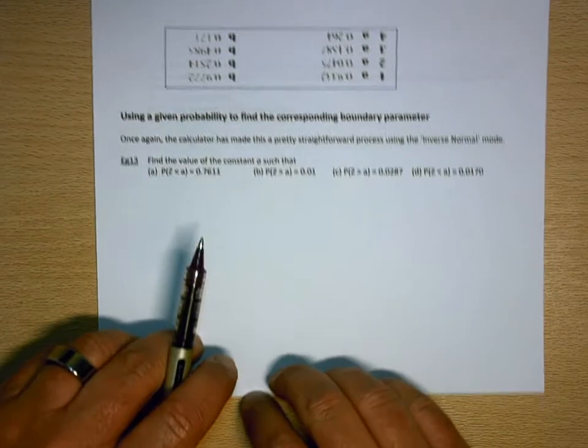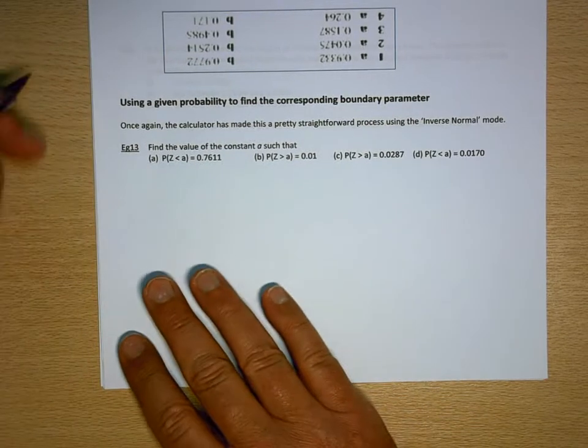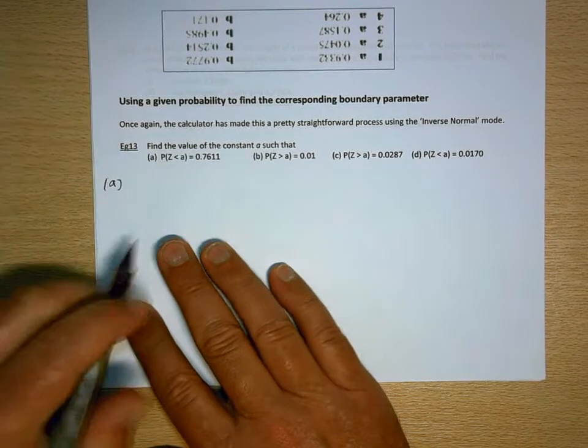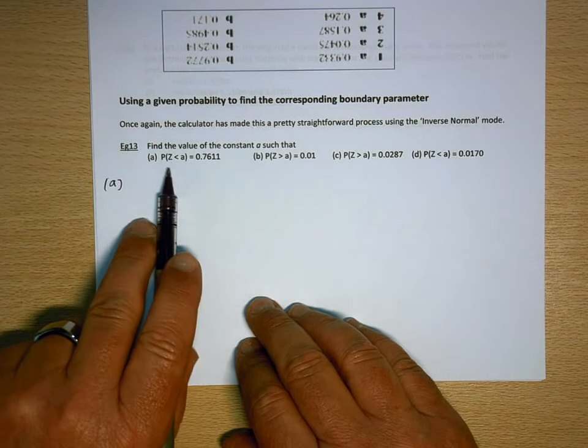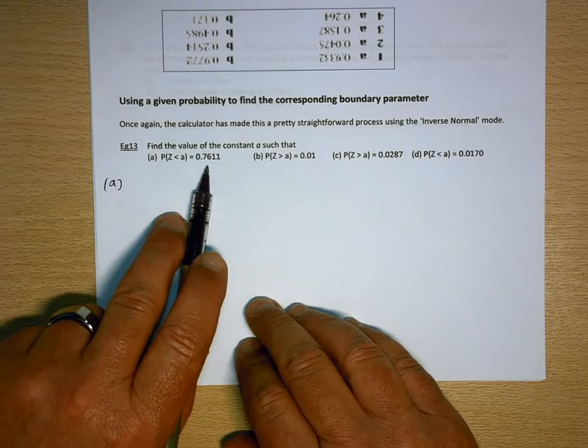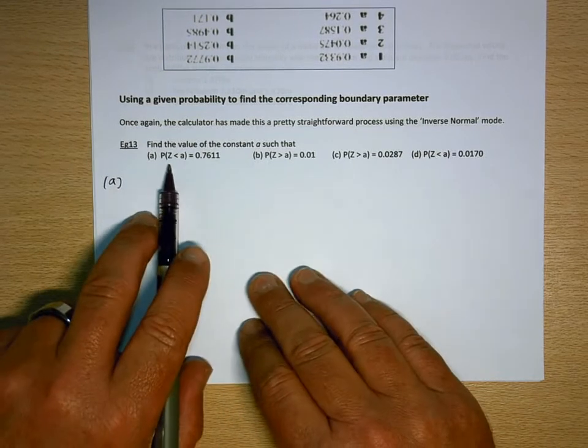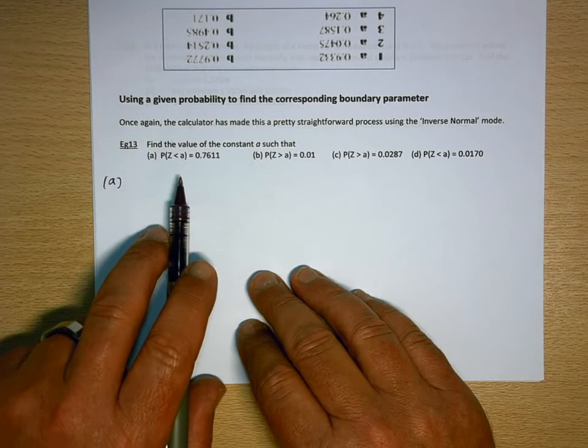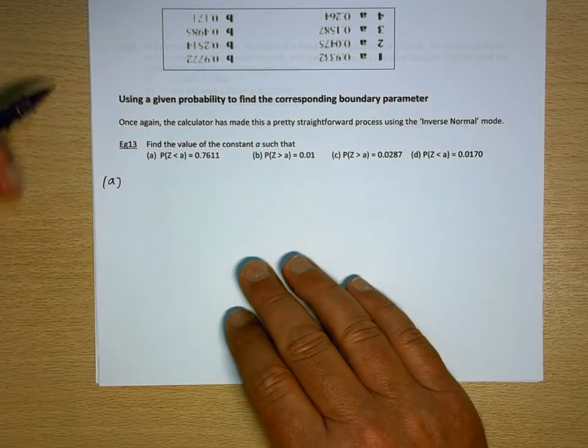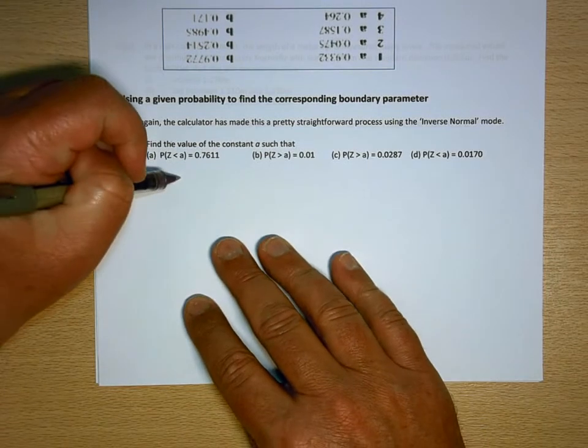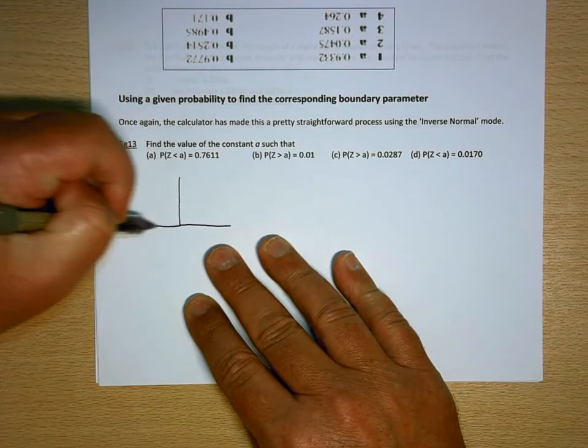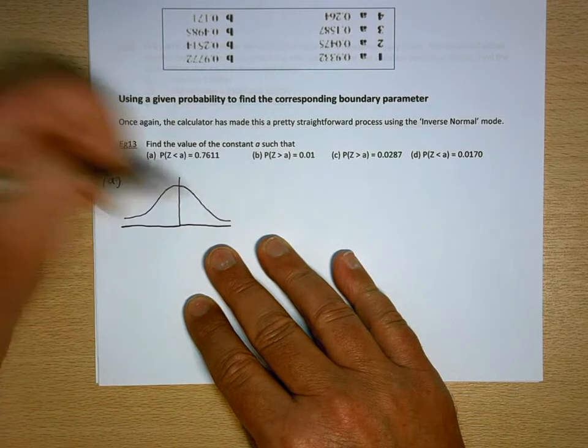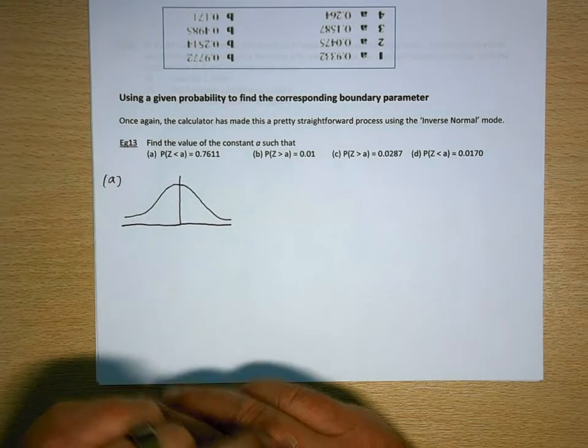And that's a pretty straightforward thing to do on the calculator. There's one little thing that you need to be aware of, but let's take a look here. So part A: find the value of the constant a such that the probability that z is less than a equals 0.7611. So the variable provided is z, so that's telling me that I'm using the standard normal distribution, which has got a mean of 0 and a standard deviation of 1. As with all normal distribution questions, I think it's really helpful to draw a little sketch. It doesn't have to be a work of art, but just to have a picture of what we're looking for here.